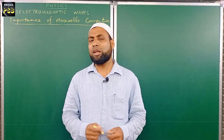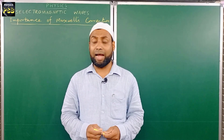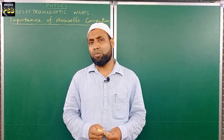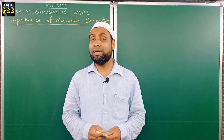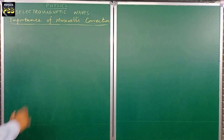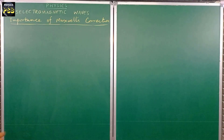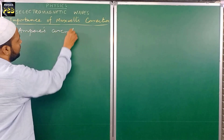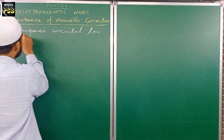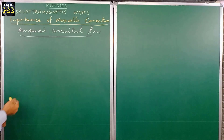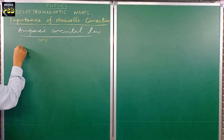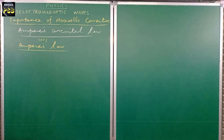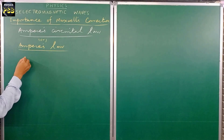So if Ampere's law alone were true, there would be no existence of electromagnetic radiation in space. But we are continuously receiving electromagnetic radiation from the Sun and other stars on the surface of Earth. So what is the reason behind it? Let's explore it in this video to get the answer. I'll start with Ampere's circuit, also known as Ampere's law.